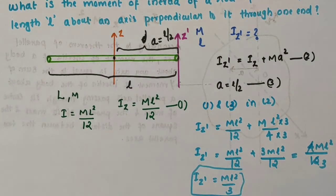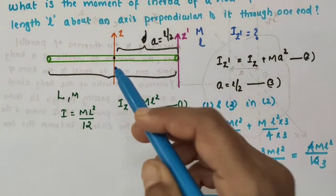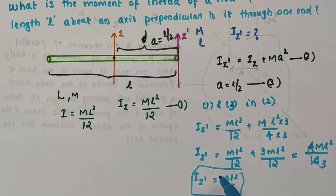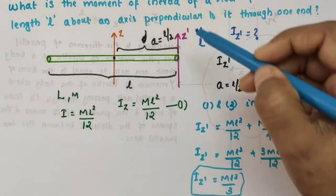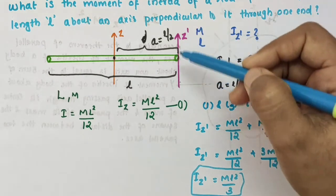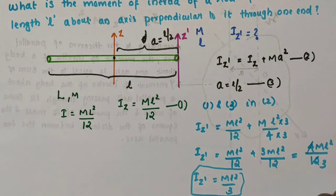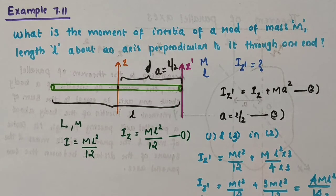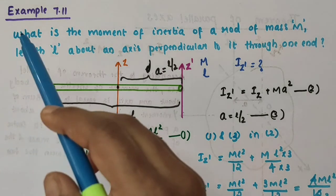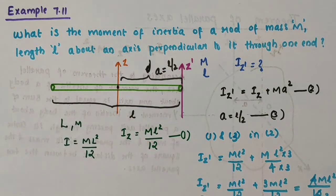So the moment of inertia of a rod of mass M and length l about an axis perpendicular to the rod and passing through one end is ml²/3. In this video we discussed Example 7.11. I hope you understood this. Thank you.